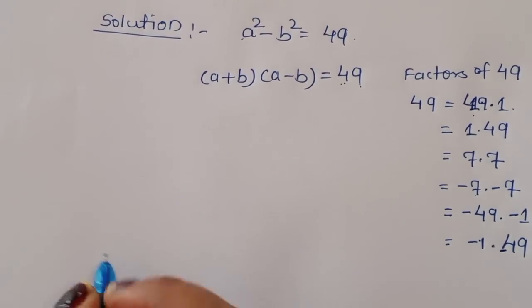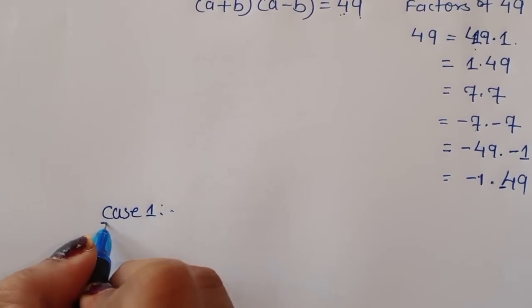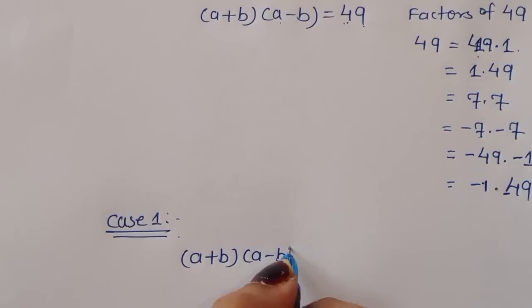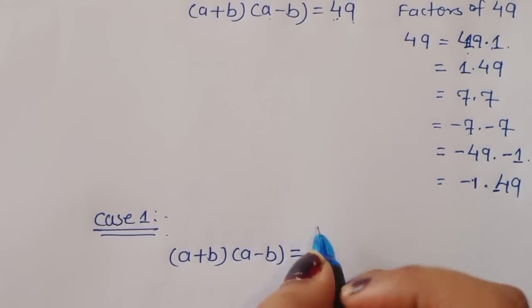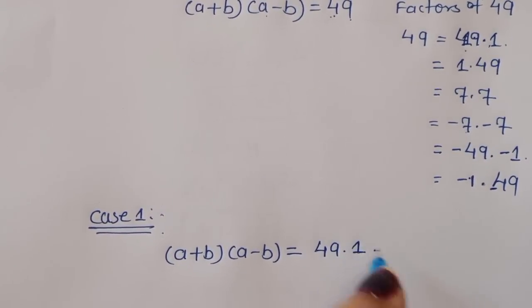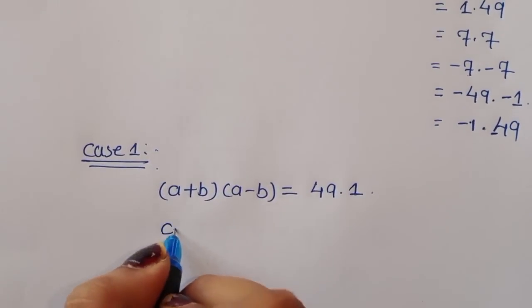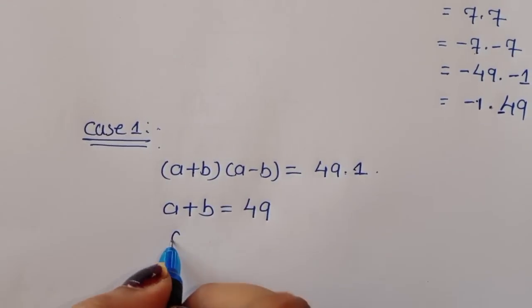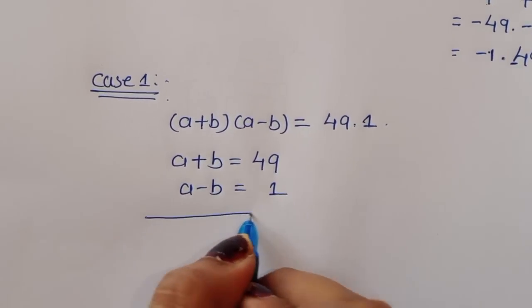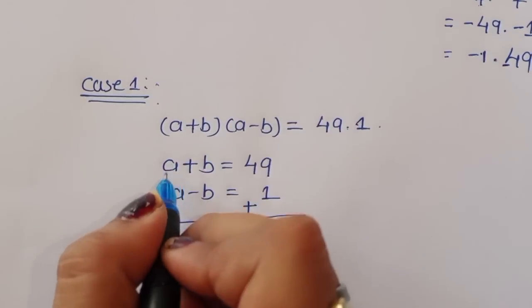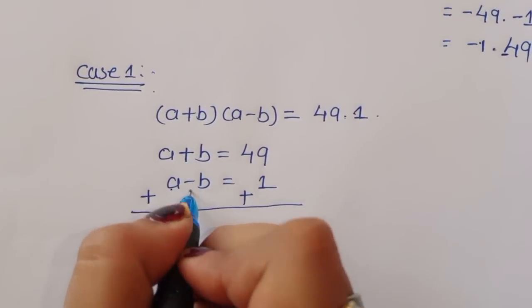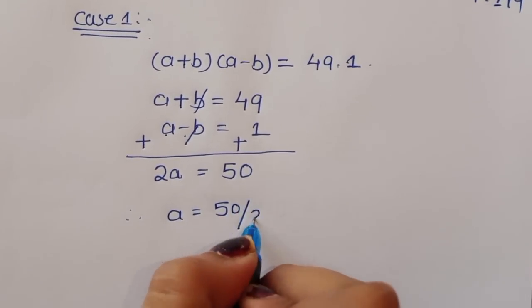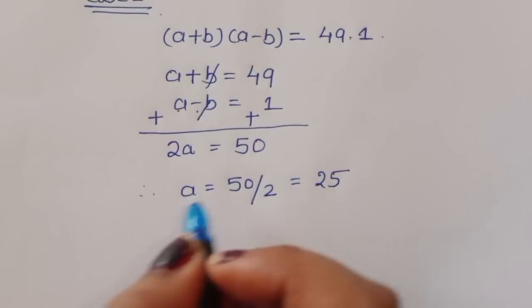Case 1: a plus b times a minus b is equal to 49 times 1. Comparing terms, a plus b is equal to 49 and a minus b is equal to 1. Adding these two equations: 2a equals 50, therefore a is equal to 50 divided by 2, which is 25.